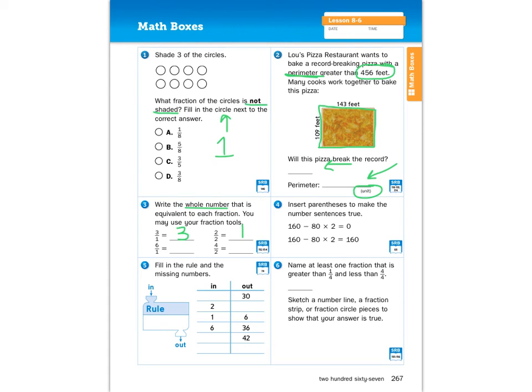Number four, insert parentheses to make the number sentence true. So for the first one, we have to get zero as our answer. So we have 160, take away 80, and then multiply it by 2. But I feel like if we do it that way, it's just going to get even bigger. So let's try this. What if we put parentheses around 80 times 2? 80 times 2 is 160. So 160 minus 160, that would be zero. Go ahead and put the parentheses on the next one.